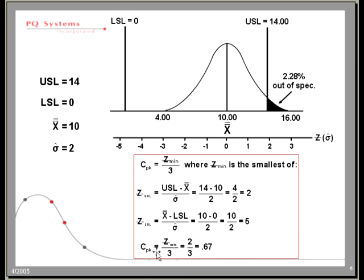High math here. What does it say? Take the smallest, 2 or 5. 2 is the smallest. 2 divided by 3. There it is. There's your Cpk. In this case, the Cpk would equal 0.67.